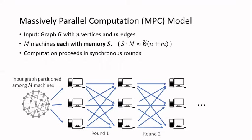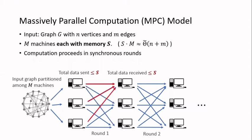The communication graph is the complete graph, which means that every pair of machines can send messages to each other. The only restriction is that the total message size cannot exceed the memory limit. So in each round, the total data sent from a machine is at most S, and the total data received by a machine is also at most S. In this model, we assume that local computation is cheap and the bottleneck is communication, so we want to optimize the round complexity.